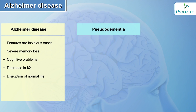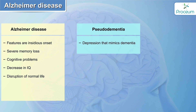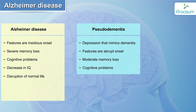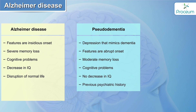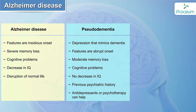Pseudodementia, on the other hand, is any organic disease that presents with dementia-like features. Symptoms are abrupt in onset with moderate memory loss and cognitive problems, but there is usually no decrease in IQ. Patients have a history of psychiatric illness, and treatment of the underlying cause — like antidepressants or psychotherapy — can help.